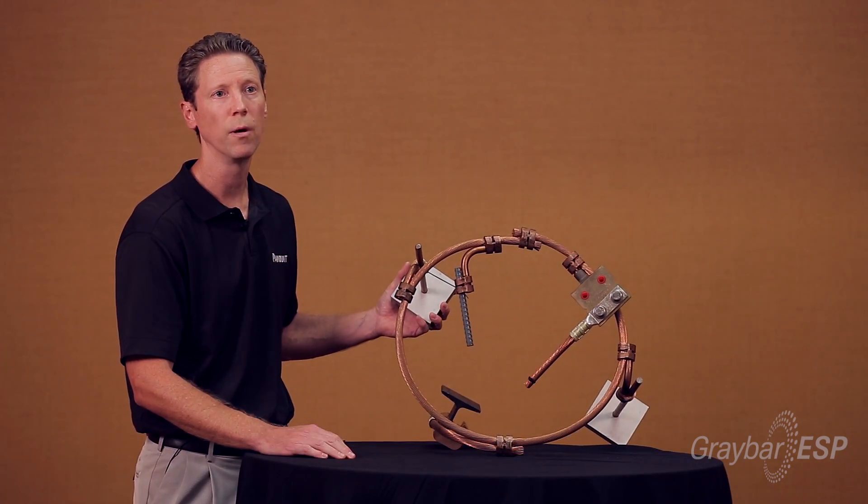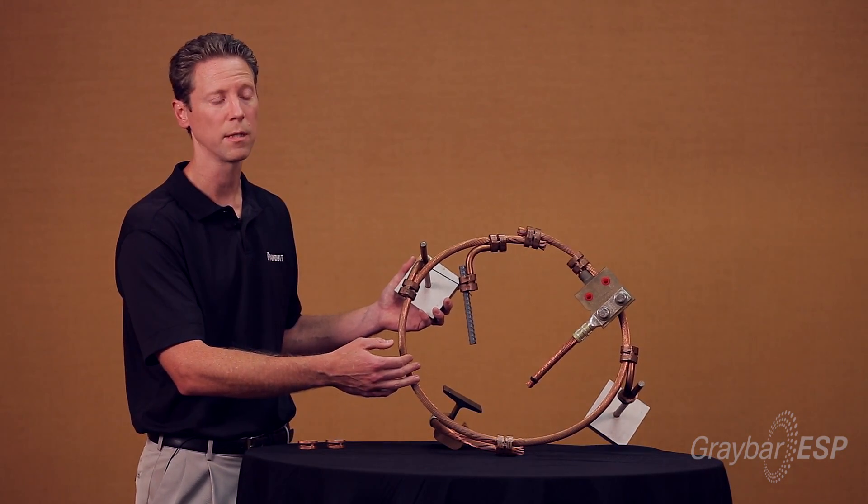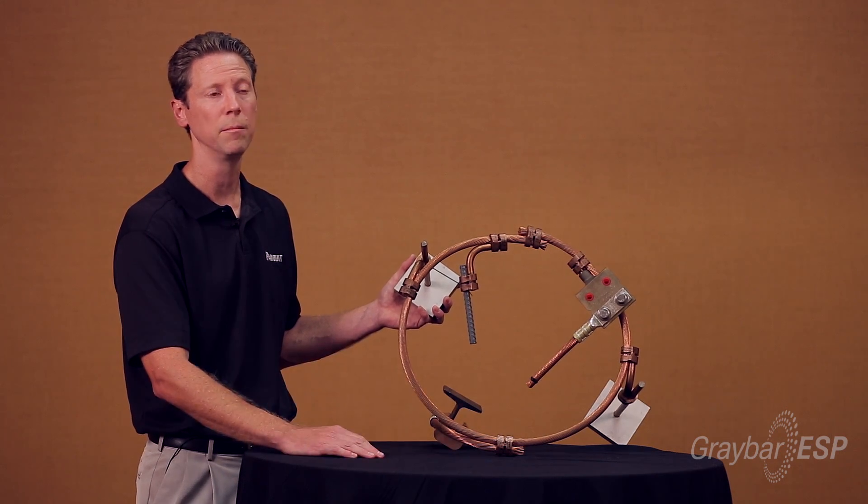Again, you've got 12 parts for the family to cover the wire ranges that we discussed, a number six to 500 KC mil.